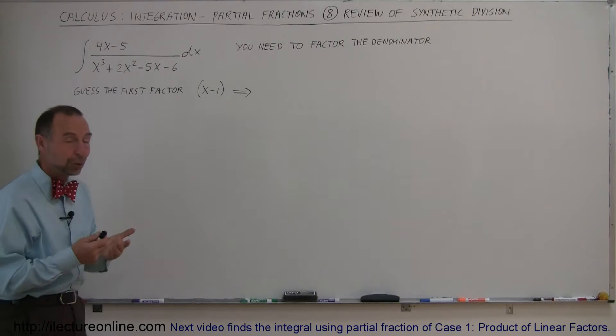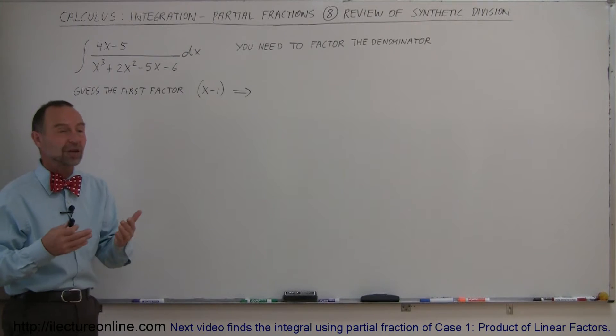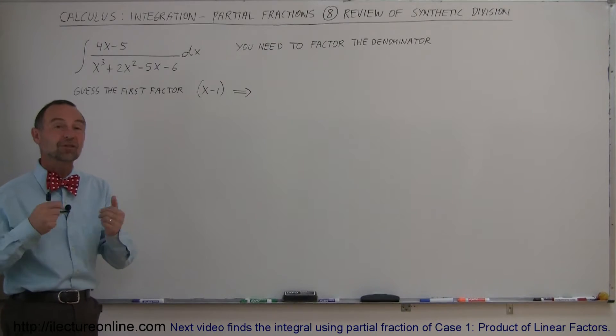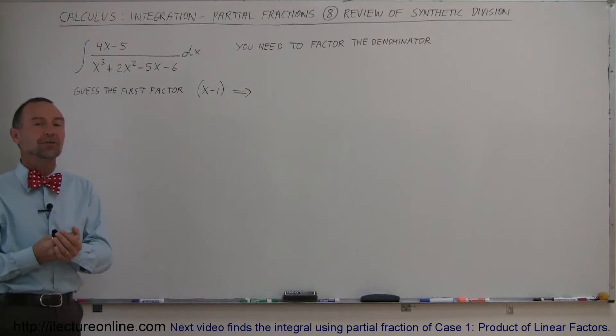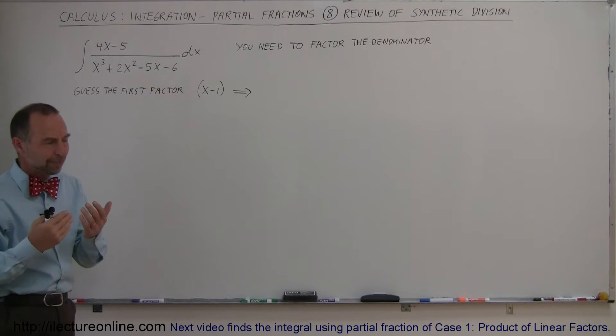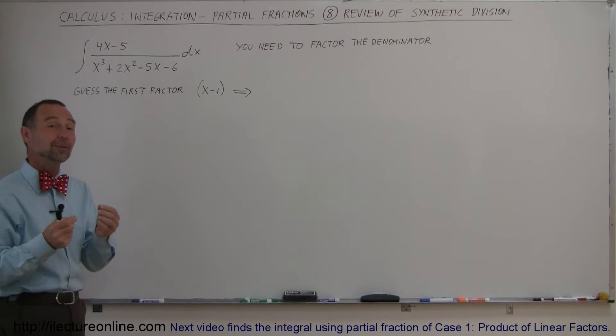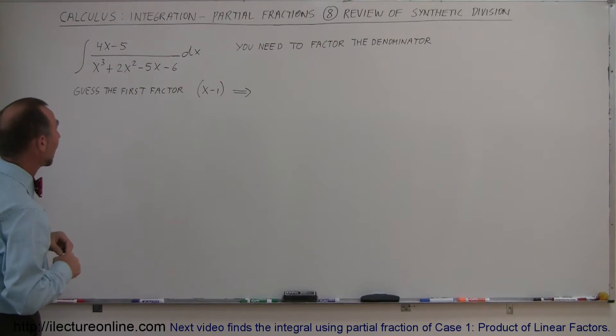When we have a third order, or fourth order, or fifth order expression in the denominator, we need to factor it in order to be able to write it as a sum of partial fractions. Maybe we're a little rusty, so I figure we'll do a little example here on how to use what we call synthetic division to come up with the factors of this denominator.